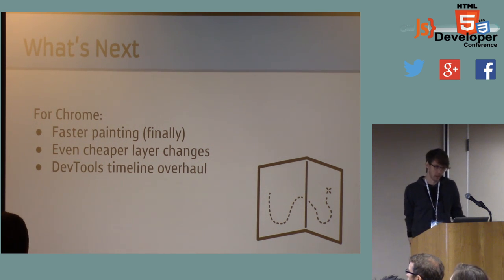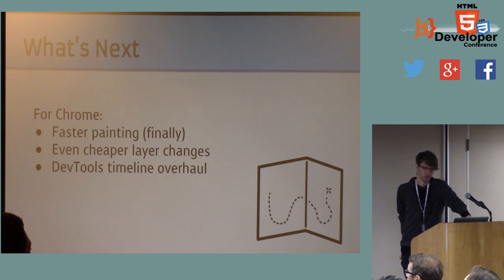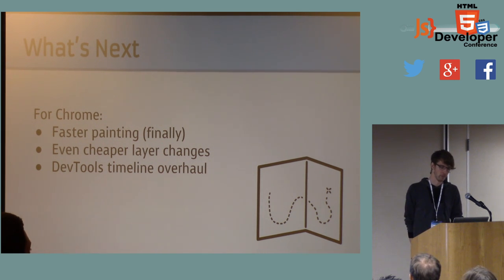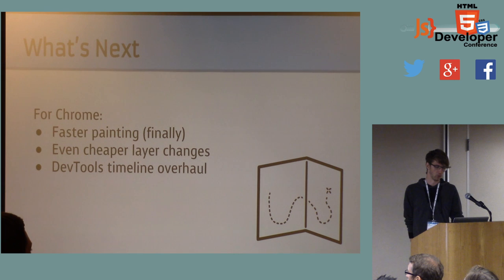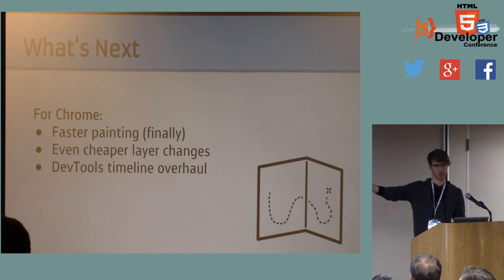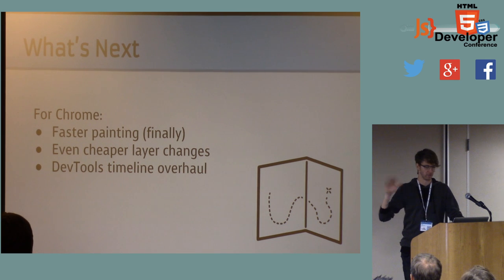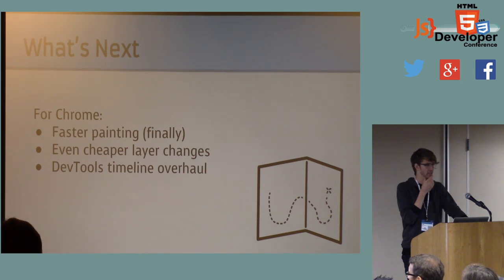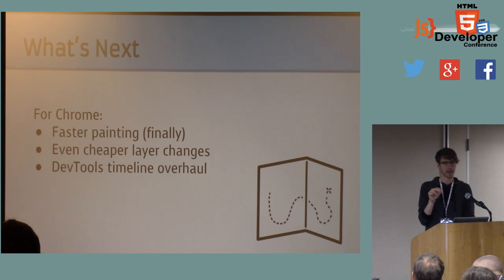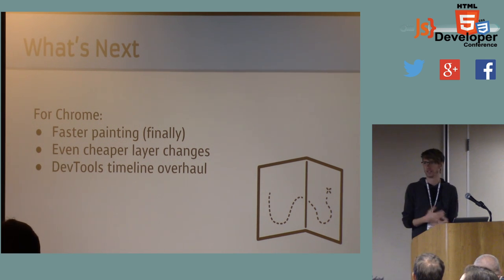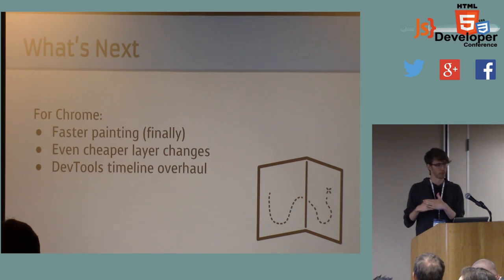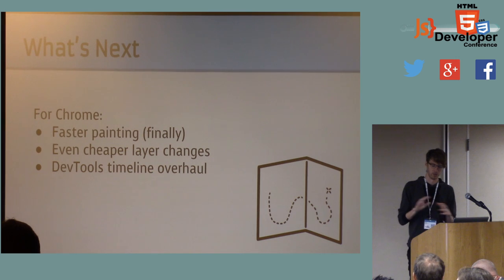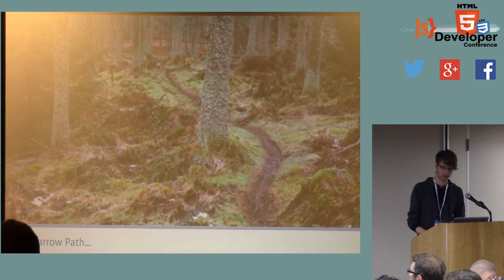What's next? Some things on my radar we're trying to do in Chrome: we're trying to finally make painting faster — nothing very interesting to share at the moment, but we're actively working on it. We're trying to make layer updates from JavaScript — setting inline style — even cheaper still, beyond the Web Animations trick. And the DevTools timeline is getting an overhaul I'm very excited about, because it's going to show a lot more detailed information. Right now the timeline is a fantastic tool, but you bottom out pretty quickly if you're trying to debug performance stuff, so we're going to expose more information there.